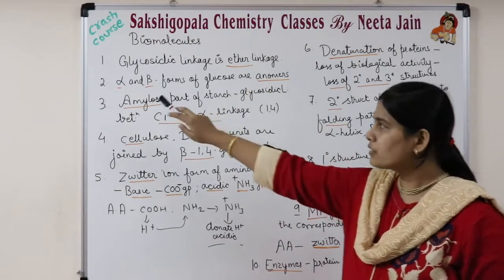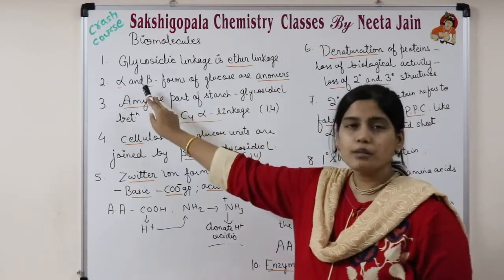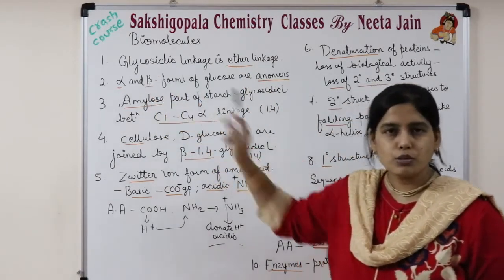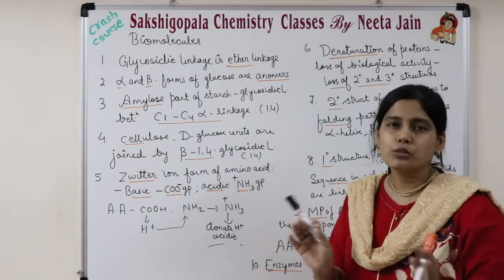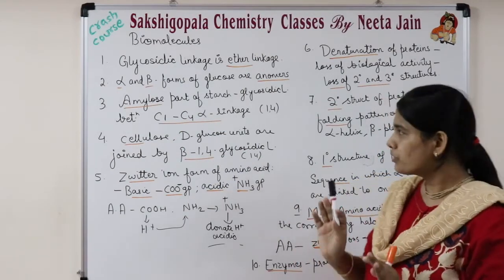The second point: the alpha and beta forms of glucose are called anomers. They are anomers of each other.